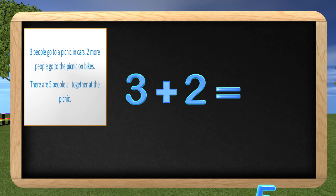I will also put an equal sign because all good math sentences usually have an equal sign. So if I add these together, I know that there are five people who went to the picnic. Here is our equation. Three plus two equals five. Great job, kids!